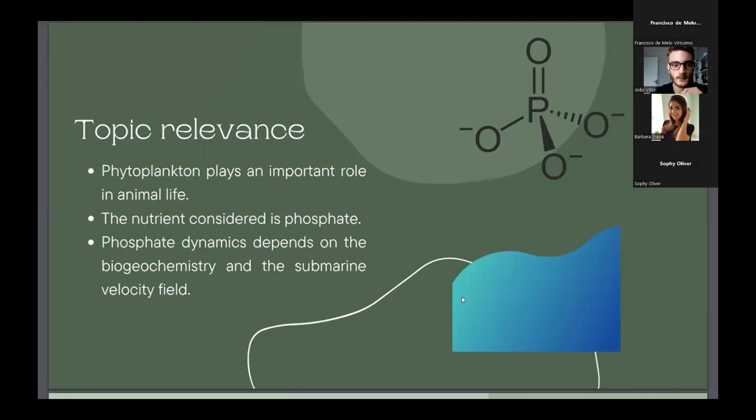So, beginning, talking about phytoplankton and phosphate, we know that phytoplankton plays an important role in animal life, especially because of the photosynthesis, and the one nutrient that is very important to them is phosphate. So, here I am analyzing the phosphate dynamics. And the phosphate dynamics depends on the biogeochemistry and the submarine velocity field.